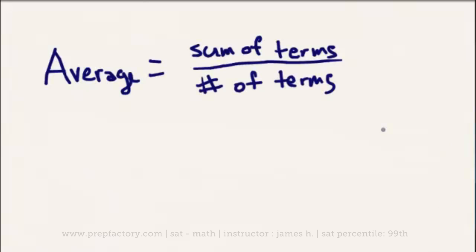For average questions, there's really only one important thing that you need to know, and that is the average formula, which I will put right here. To find the average of anything, all you really need to do is put the sum of all the terms over the number of terms. So say you're trying to find the average of 3, 4, and 5 — you would add them together and divide by 3. 3 plus 4 is 7, 7 plus 5 is 12, 12 divided by 3 is 4. So the average of 3, 4, and 5 is 4.